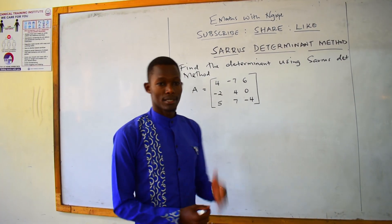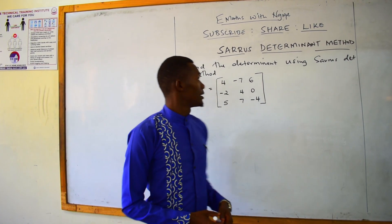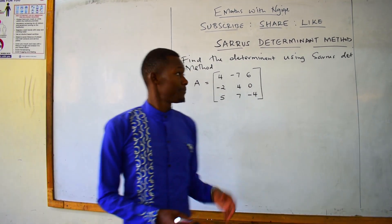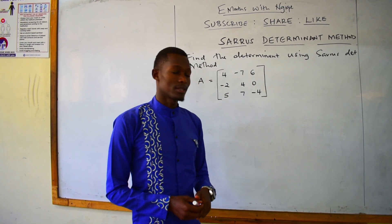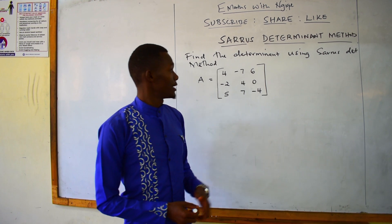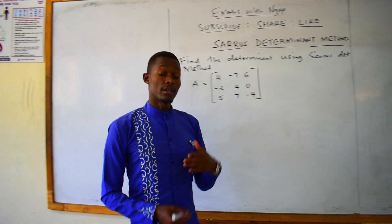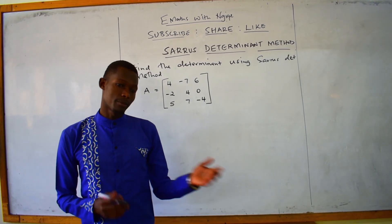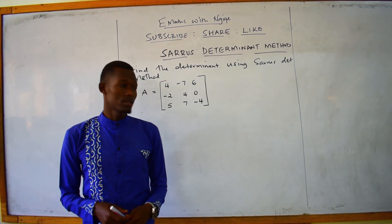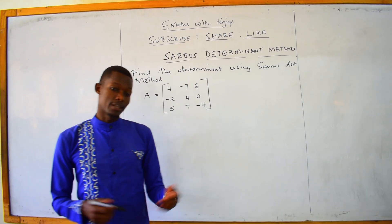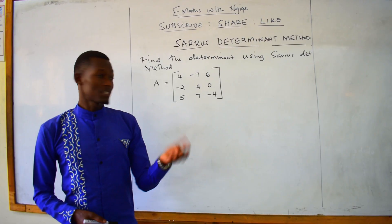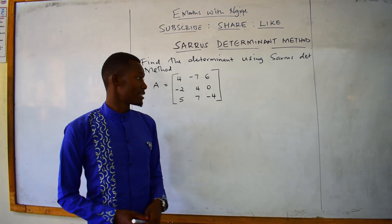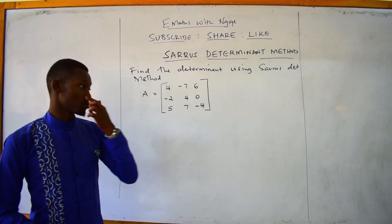Today we are going to learn something new — finding determinants using the Sarrus method. In the previous lesson, in case you missed it, we saw how to find determinants using the normal way. Now we have a special way, another form of finding determinants, and this is the Sarrus method.